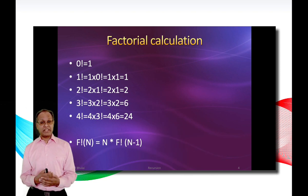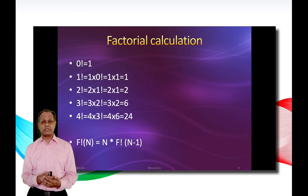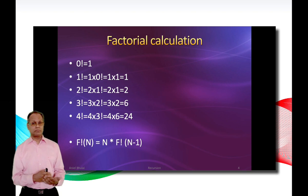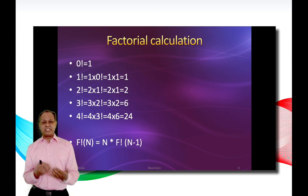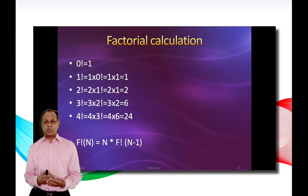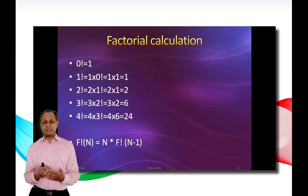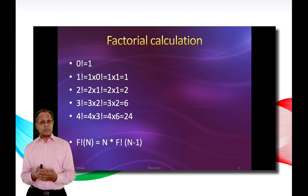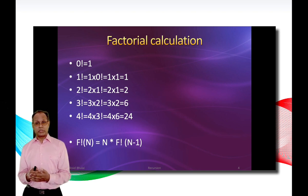Now let's calculate some factorials before we explain how recursion works in the factorial function. As said earlier, zero factorial is equal to one — this is a definition in mathematics. One factorial is 1 times 0 factorial, which equals 1. Two factorial equals 2 times 1 factorial, which equals 2.